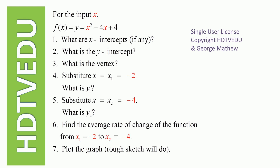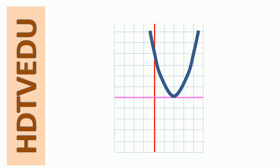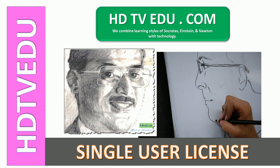We now know the average rate of change of the function. For question seven, plot the graph — that's a rough sketch. The x-intercept is (2, 0), the y-intercept is (0, 4), and (2, 0) is also the vertex. This is George Matthew signing off — good luck!